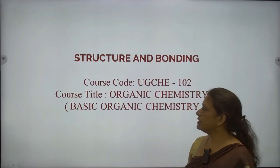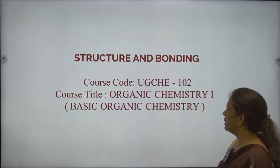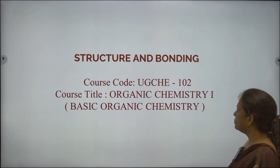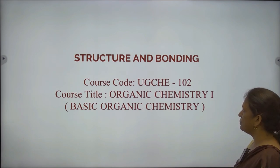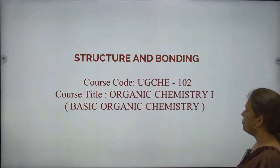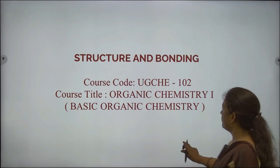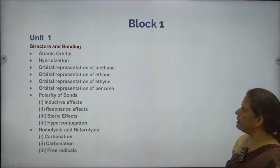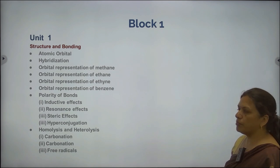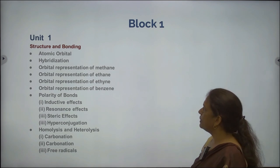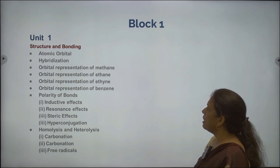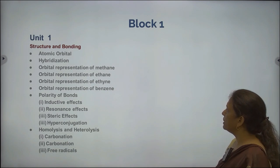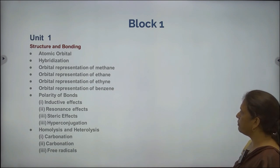Today we will be starting with Structure and Bonding, Course Code UGCHE 102, Course Title Organic Chemistry 1: Basic Organic Chemistry. In the last lecture, we talked about Atomic Orbital Hybridization, Orbital Representation of Methane, Ethane, Ethine and Benzene.